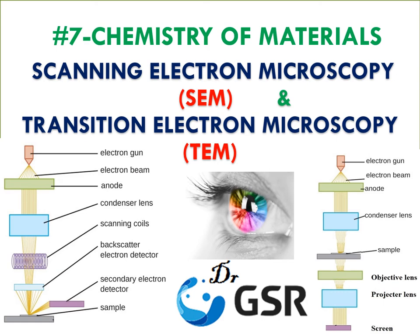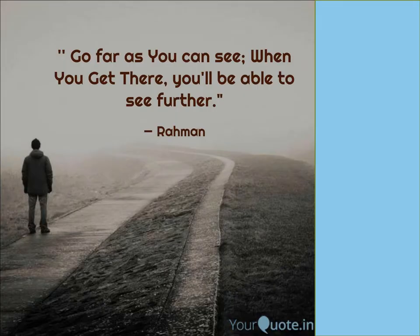Vision is very important to know the details of a material. If you want to study the properties and applications of materials, you should know the shape and size of the material. These details can be perfectly provided by Scanning Electron Microscopy and Transmission Electron Microscopy. Today we are going to study the basic structure of SEM and TEM in the topic of chemistry of materials.